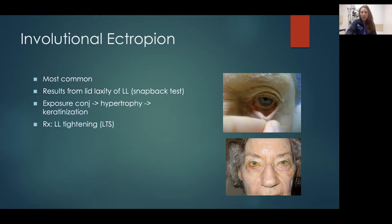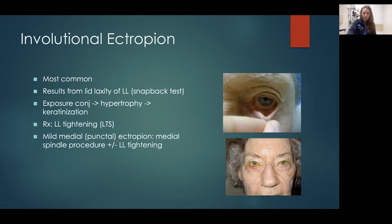The treatment for this is surgical. We do a lower lid tightening procedure called the lateral tarsal strip, where we take a piece of the lateral part of the eyelid, cut it off, and re-suture the eyelid to the periosteum — the bone of the lateral orbit — which tightens the lid and pulls it back onto the globe. For punctal ectropion, when the punctum is not well opposed to the globe, there's another procedure called a spindle procedure where we tighten from the inside and pull that drain back onto the surface of the eye.